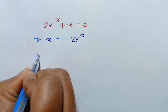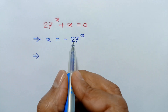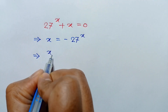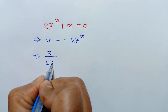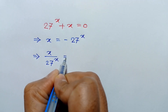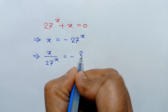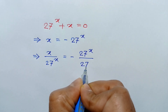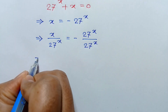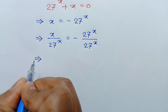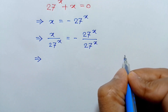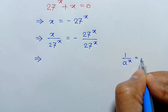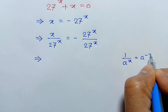Now dividing both sides by 27 to the power x, we can write x over 27 to the power x is equal to negative of 27 to the power x over 27 to the power x. According to the formula, 1 over a to the power x is equal to a to the power negative x.